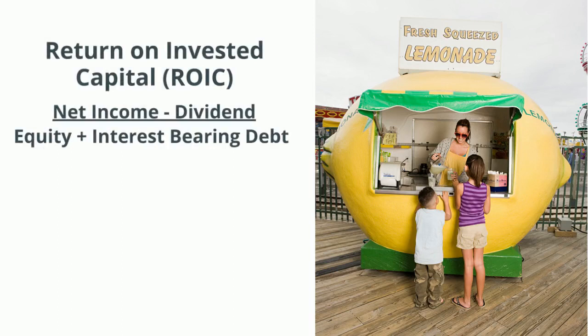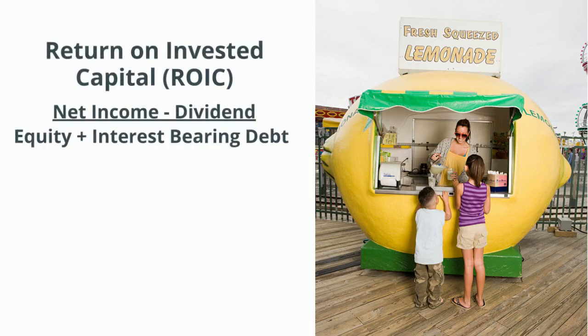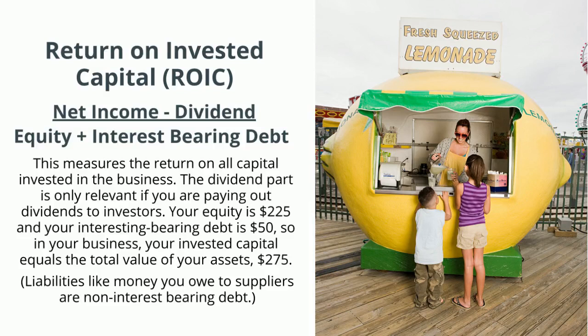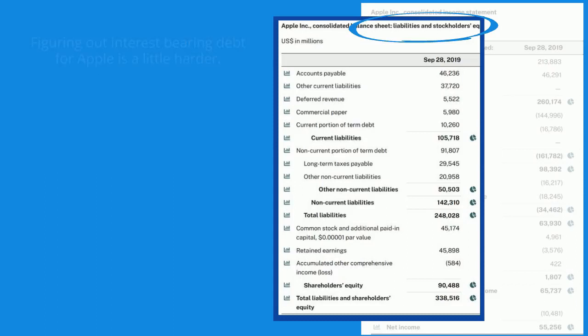Now for return on invested capital, or ROIC — a little harder but a really great ratio. It's measured as net income minus any dividends paid out, over equity plus interest-bearing debt. This measures the return on all capital invested in the business. Your equity is $225 and interest-bearing debt is $50, so invested capital equals total assets of $275. Your net income was $100, so your ROIC is 100 over 275, or 36.4%.